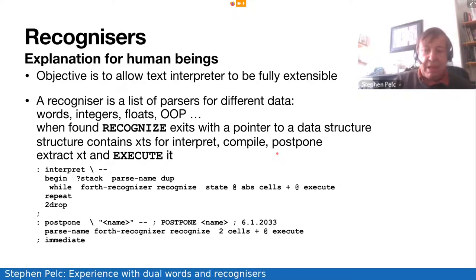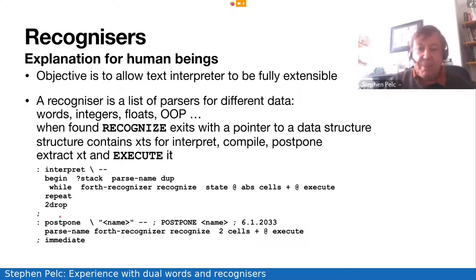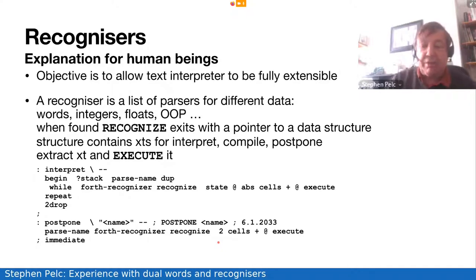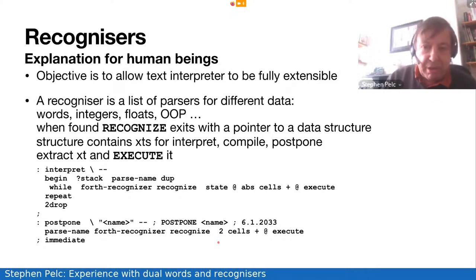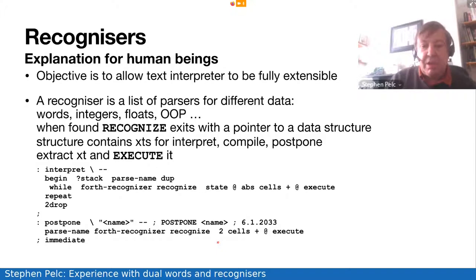The complexity, as often happens, has been transferred into how you manage these recognisers. The postpone action is the third element in the structure — two cells, and off we go. We execute it. Postpone has been reduced; it used to be a ghastly word. Now, as long as each type knows how to deal with itself, all is good.